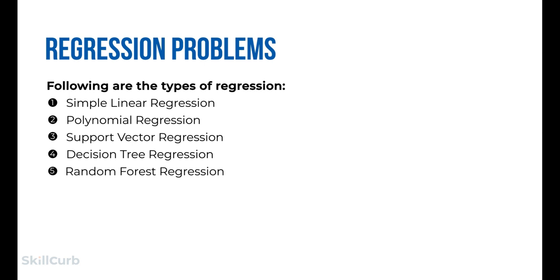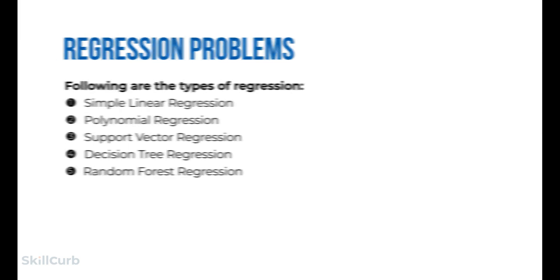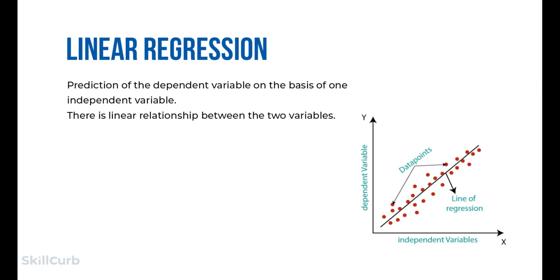Linear regression performs the task of predicting a dependent variable value (y) based on a given independent variable (x). This technique finds a linear relationship between x as input and y as output — hence the name linear regression. In the diagram you can see the line of regression found using this algorithm.